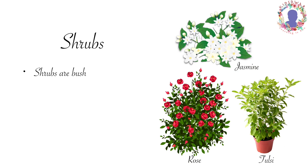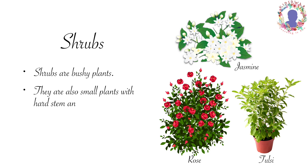Shrubs are bushy plants. They are also small plants with hard stem and branches. Tulsi, rose, jasmine are some examples of shrubs.